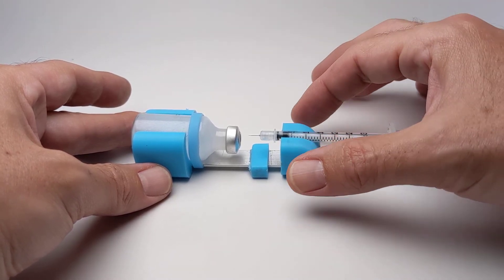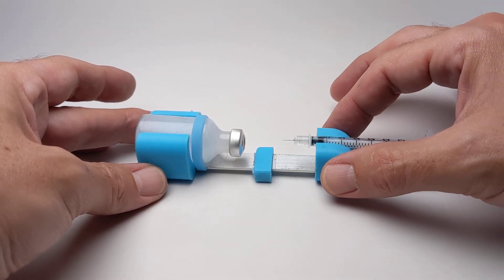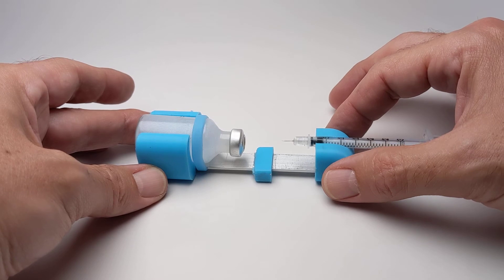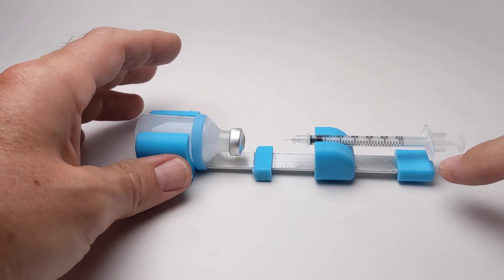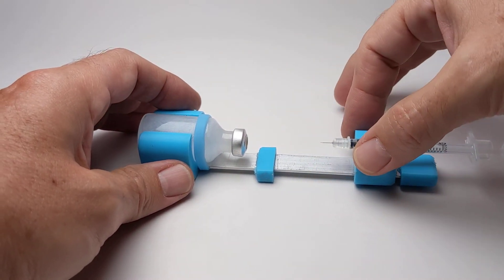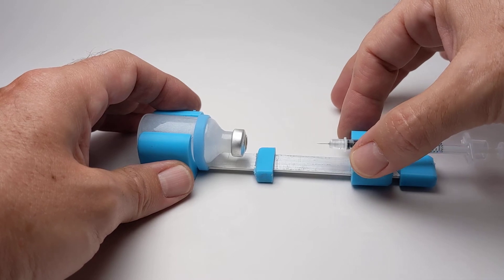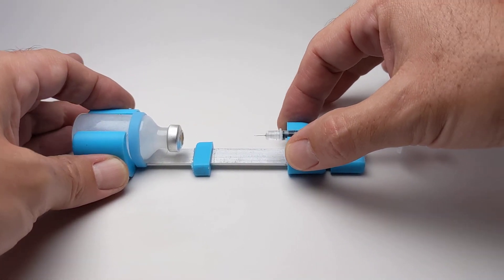Then we have the carriage and the carriage obviously is what allows the syringe to move back and forth. These come in three different sizes because there are three different size syringes for diabetics, and then at the end, we've got the stopper to prevent the carriage from coming off of the rail.